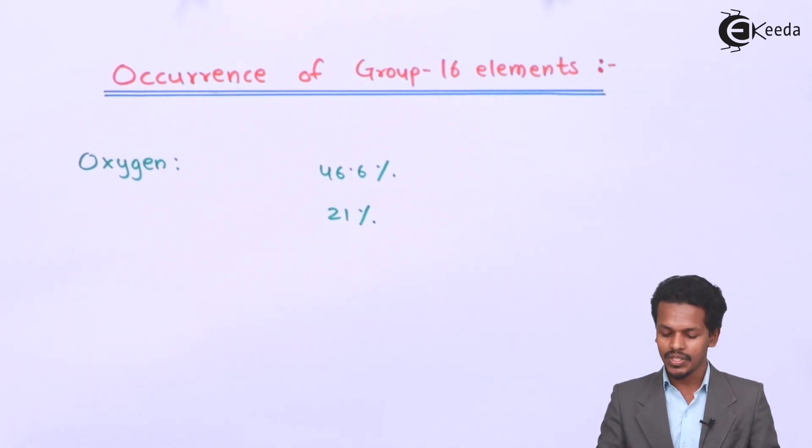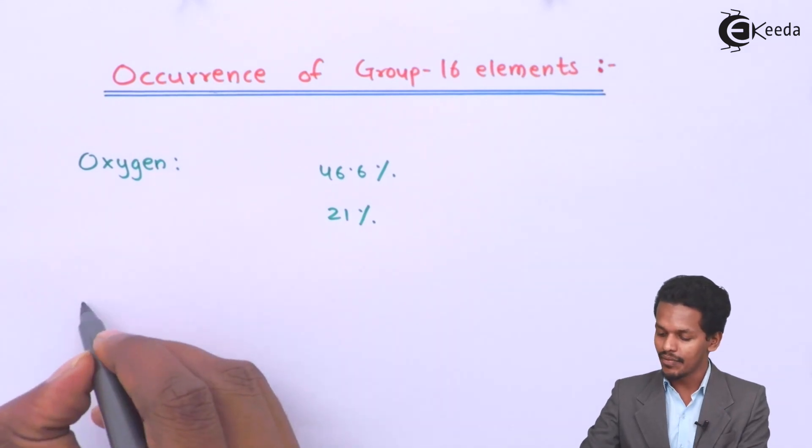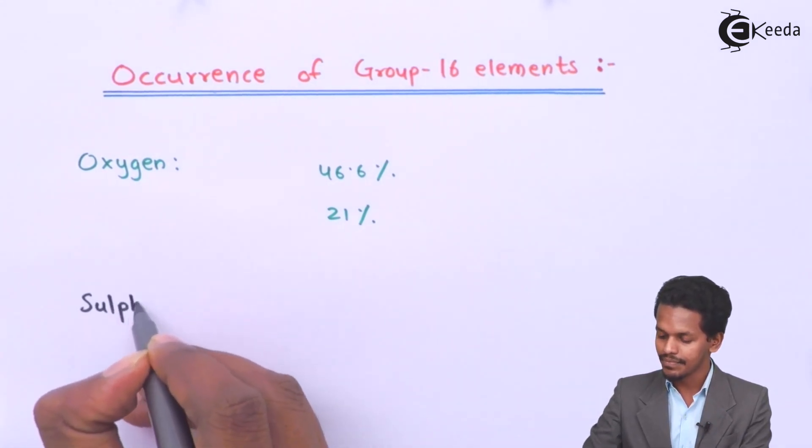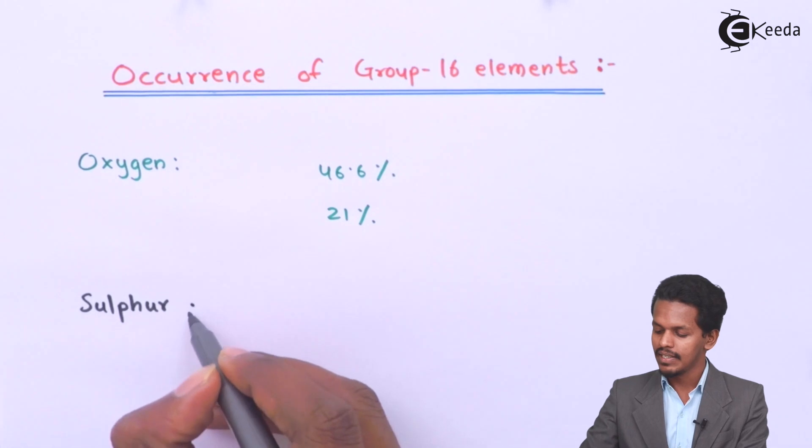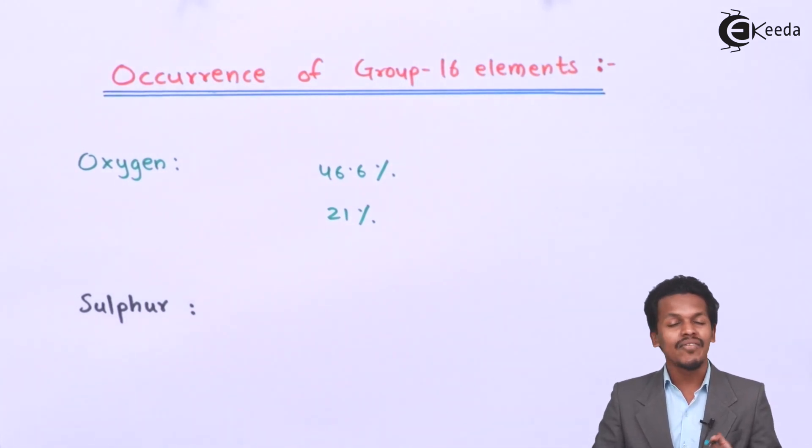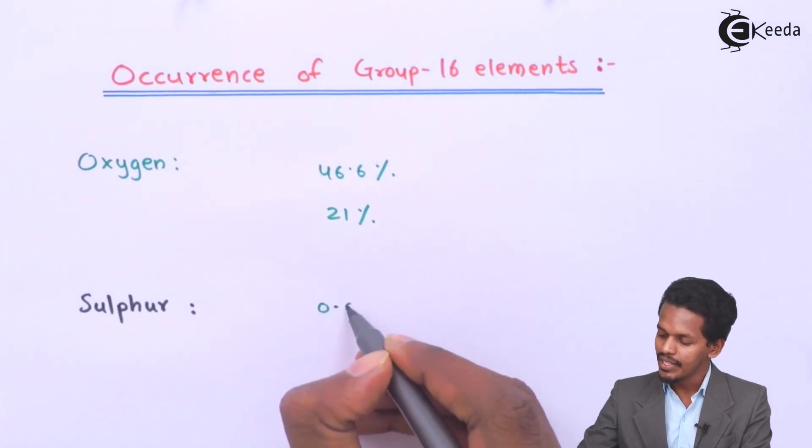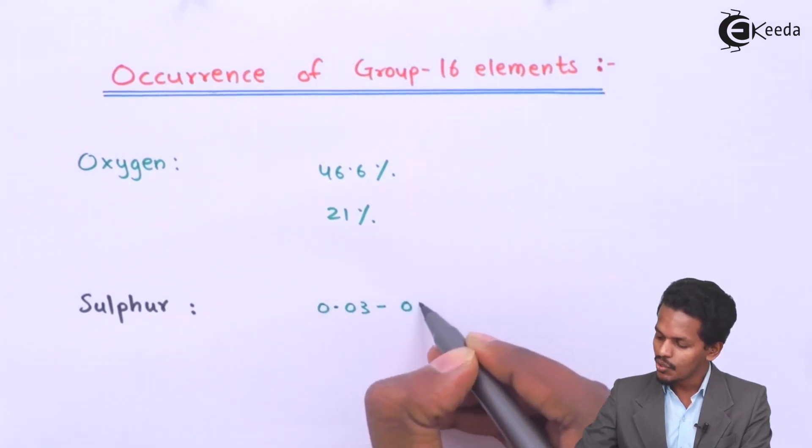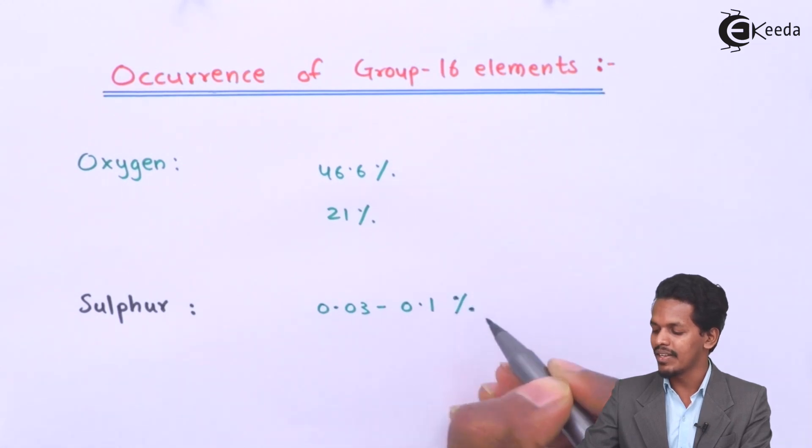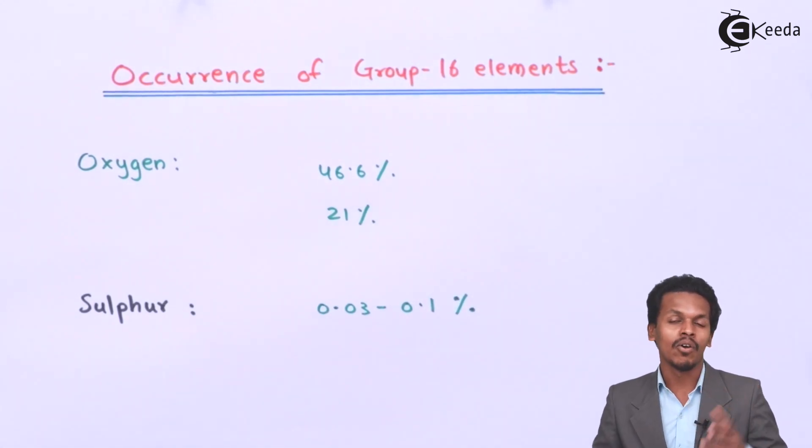Talking about the next element, sulfur. Sulfur is present in a very less quantity. In fact, it is around 0.03 to 0.1% of sulfur by mass present on the Earth's crust. Sulfur can be found in the form of sulfides as well as sulfates. Based on that, let me give you a few examples.